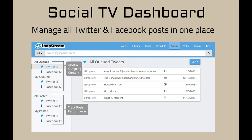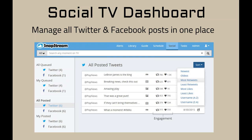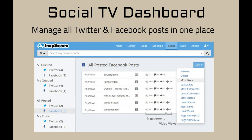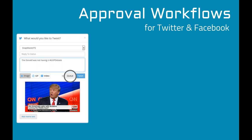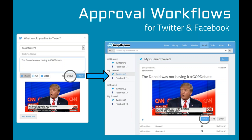We've also added a social TV dashboard that allows you to manage all your Twitter and Facebook posts in one place. Not only can you post from Snapstream, you can queue up content — tweets, images, screenshots, GIFs, video — and produce this content in advance. You can also track post performance to see what content is working most on social media, and for the first time set up approval workflows for Twitter and Facebook.